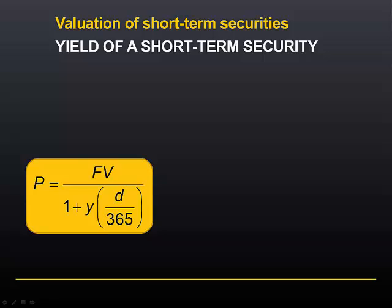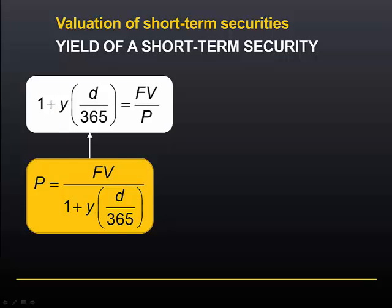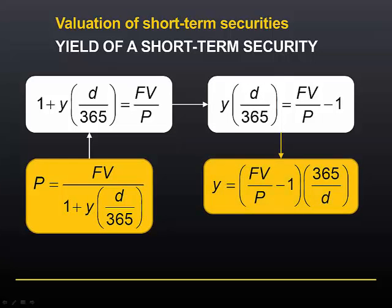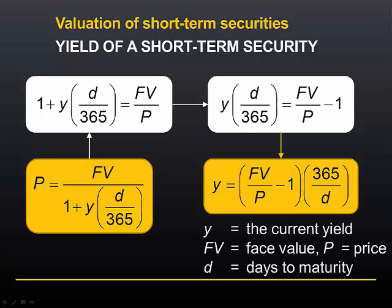So if we start with the equation that we were just using, this gives us an equation for the yield of a short-term discount security. This derivation is shown to you for information purposes only — you do not need to replicate a derivation such as this in this subject. Both of the formulas shown in yellow will be on your formula sheet.